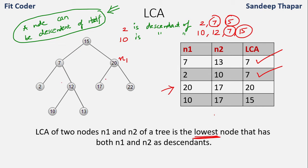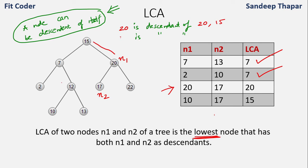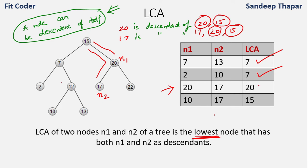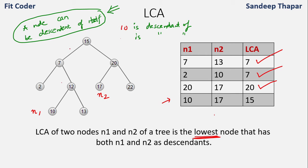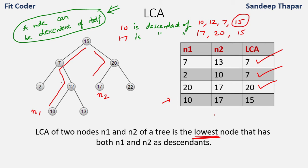In the third case, N1 is 20 and N2 is 17. Node 20 is a descendant of 20 and 15. Node 17 is a descendant of 17, 20, and 15. The common nodes are 20 and 15, and 20 is the lowest, so the LCA is node 20. In another case where N1 is 10 and N2 is 17, node 10 is a descendant of 10, 12, 7, and 15, and node 17 is a descendant of 17, 20, and 15. The only common node is 15, so the LCA is node 15.